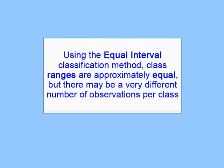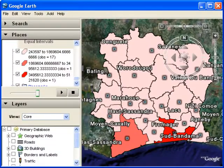Class ranges will be approximately equal, but there may be a different number of observations per class, especially if the data is skewed. In the case of our Cote d'Ivoire data, we have a couple of provinces that have a much higher population than most of the other provinces.